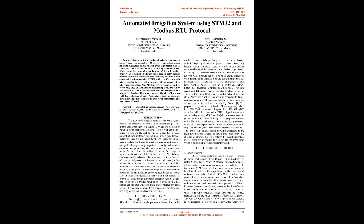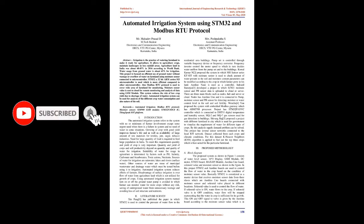Introduction: The automated irrigation system refers to a system with no or minimum farmer involvement, except in urgent need when there is a failure in the system or no need of water in some situations. Growing crops with good yield improves farmers' lives and increases availability of raw materials for textiles, jute, sugar, and tobacco industries. A large quantity of food is required to feed the large population in India, making quantity and yield of crops very important.